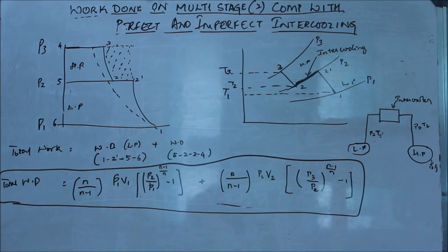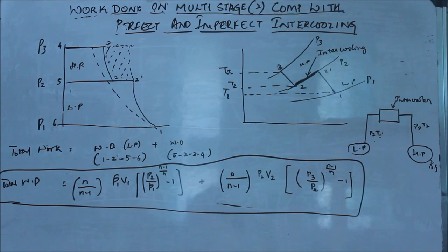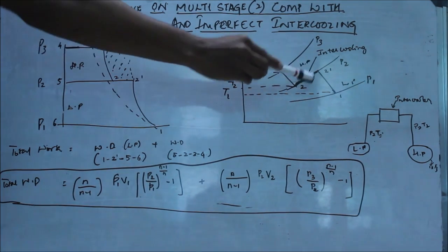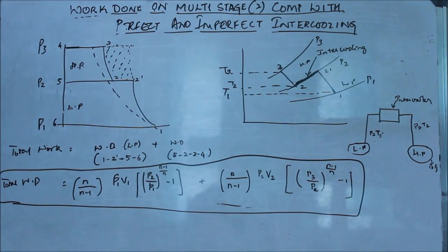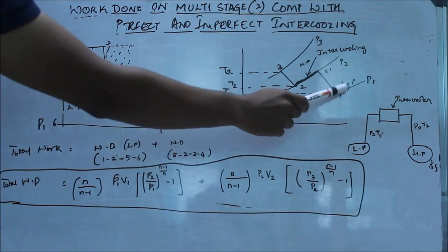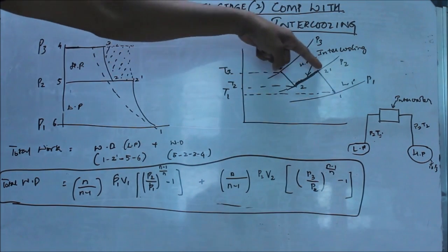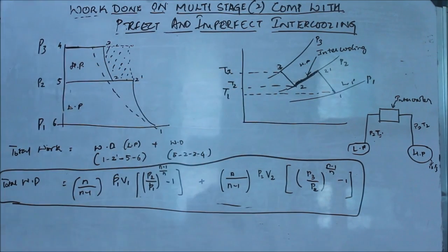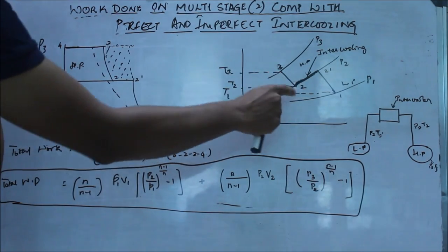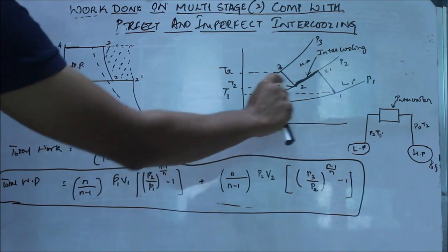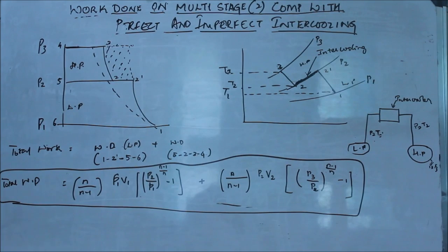First I will talk about imperfect intercooling. What happens in imperfect intercooling is that the temperature T2 that comes out of the low pressure cylinder after the first stage of compression and passes through the intercooler will not get cooled to the initial temperature T1. So if we look at this TS graph, we can see that after low pressure compression, the temperature rises from 1 to 2' and then it passes through the intercooling phase. This line here is the intercooler where the temperature reduces, but it does not reduce to T1. So T2 is not equal to T1 — this type of cooling is called imperfect intercooling. Then it gets again compressed in the high pressure cylinder and its temperature rises to T3.